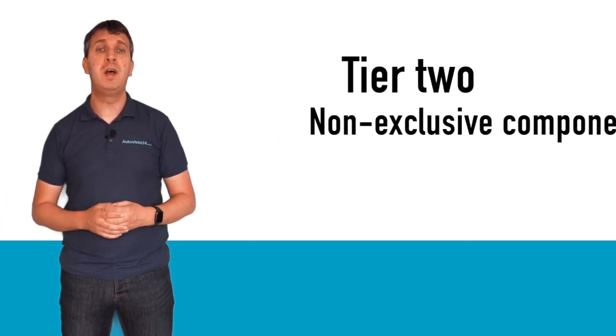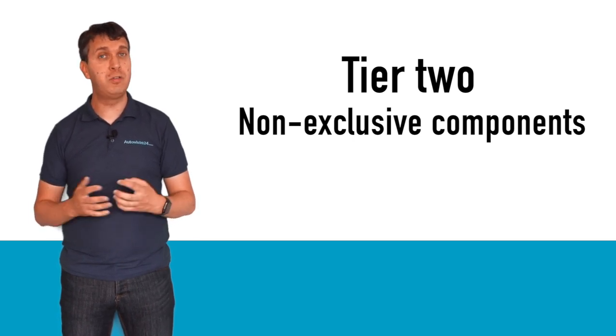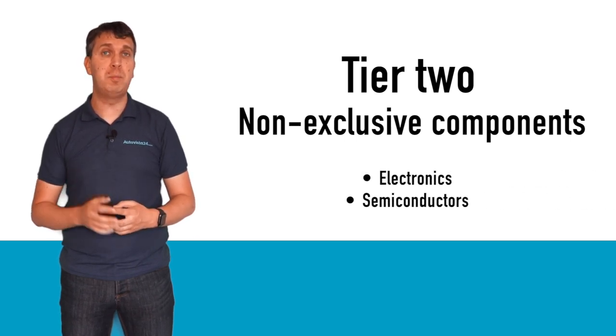Tier 2 suppliers make needed parts and components but they are not limited to just cars. They can also supply to other industries. Electronics and semiconductors are an example of this.